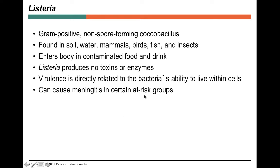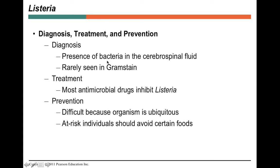Listeria is another gram-positive bacillus. It can exist in cold temperatures as well as room or body temperature. It can cross the placenta causing illness in infants, cause preterm labor, meningitis, and foodborne illness. It grows well on plates and can be seen on a gram stain. Most drugs will treat listeria if caught in time. It's found in low quantities broadly, making it difficult to prevent.